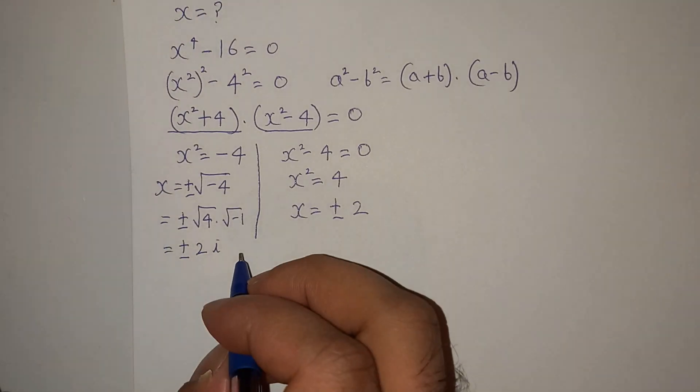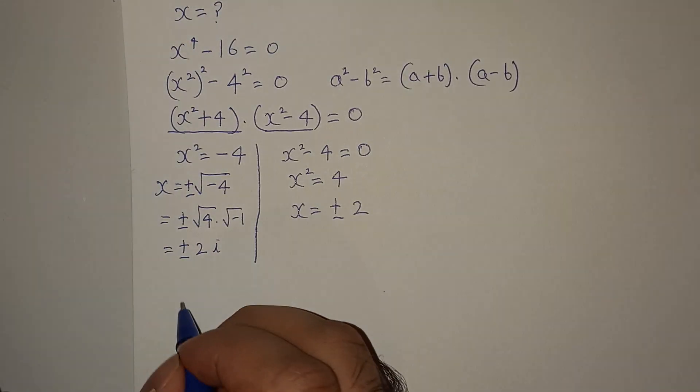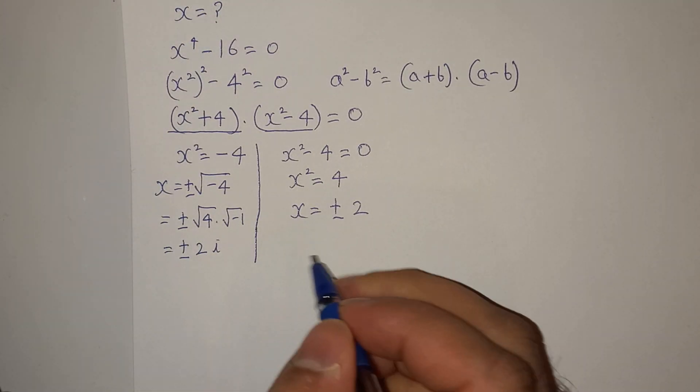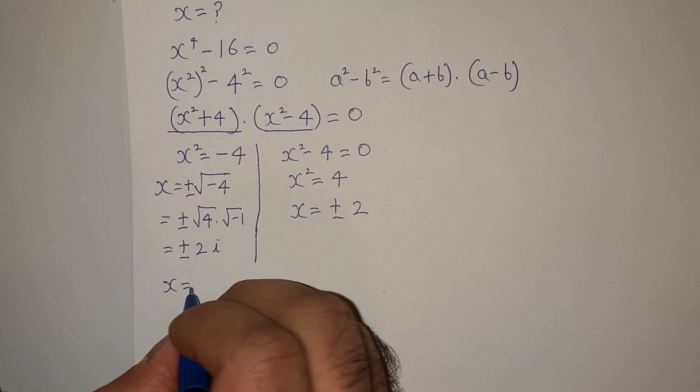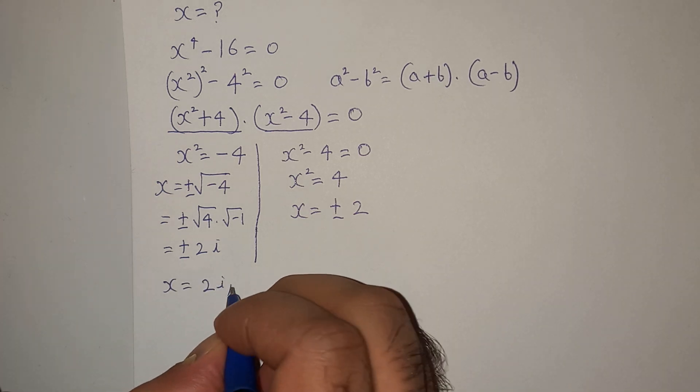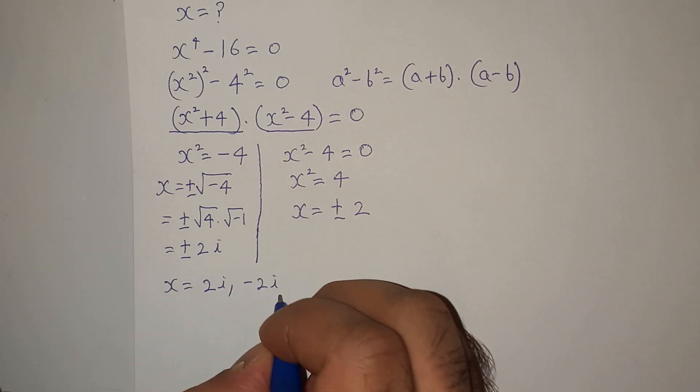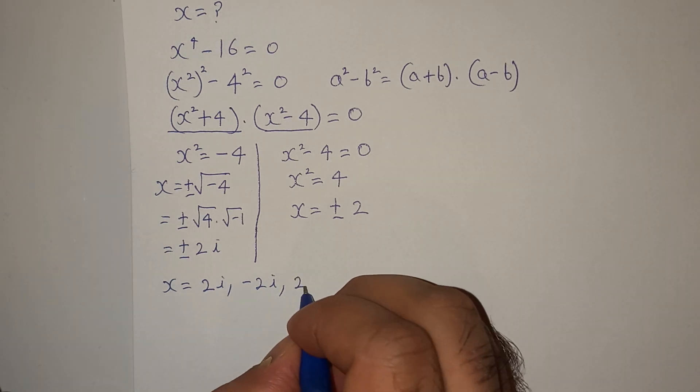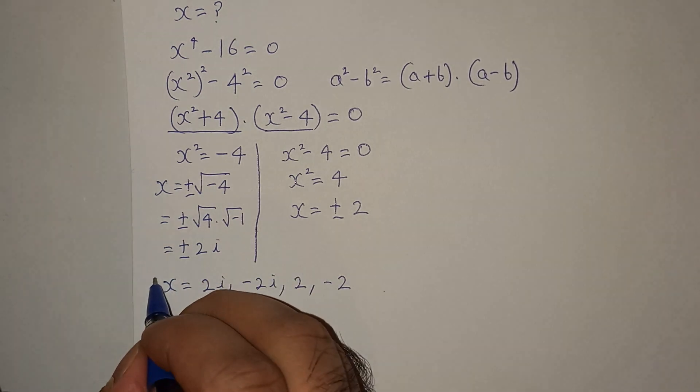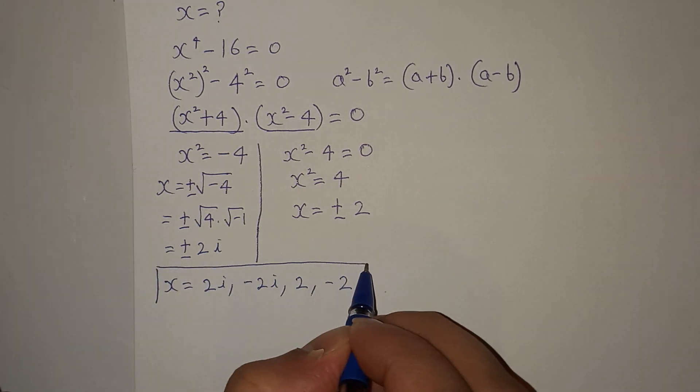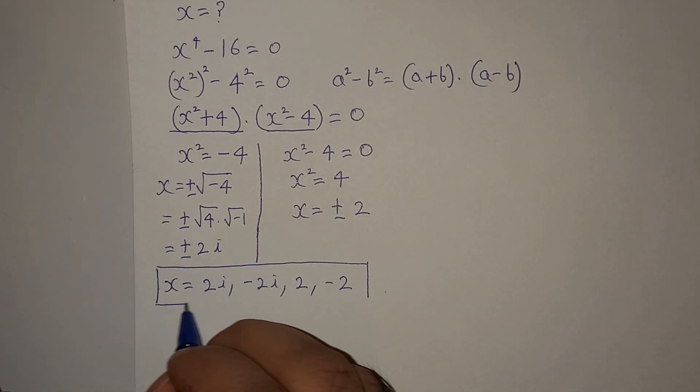So how many values of x did we get? We got 2i, minus 2i, then plus 2 and minus 2. So these are the four numbers.